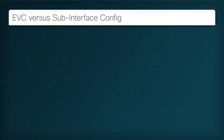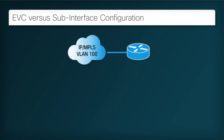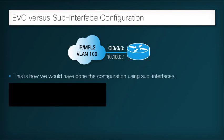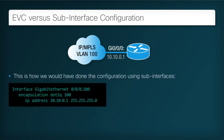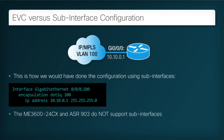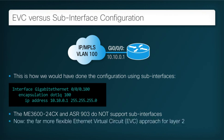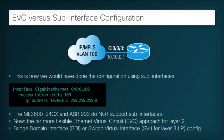Historically, customers configured VLAN encapsulation and IP address information by using a subinterface construction. However, the ME3600-24CX and ASR903, like an increasing number of modern platforms, do not support the subinterface approach. Instead, we now use the far more flexible Ethernet Virtual Circuit, or EVC, configuration architecture for Layer 2 services, and either the Bridge Domain Interface (BDI) or Switch Virtual Interface (SVI) for Layer 3 IP configuration.